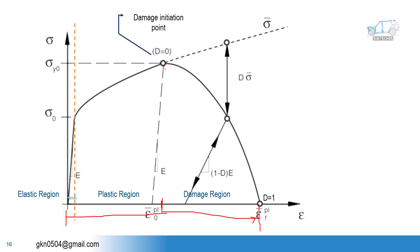So we need to define the plastic strain. Suppose my plastic strain is 0.05. Generally, we have the material parameters from experimentation or from the research article. But what people do for practice purposes, they consider these parameters randomly. Suppose my plastic strain is 0.05 and the fracture strain is 0.06 — just after the plastic strain.